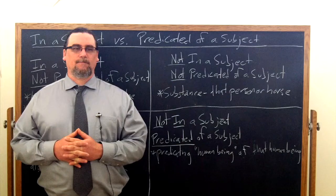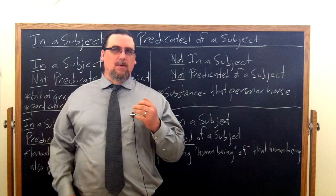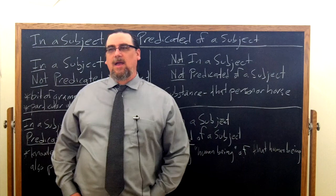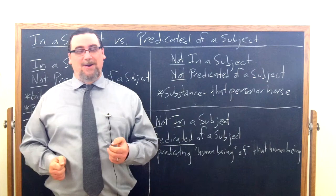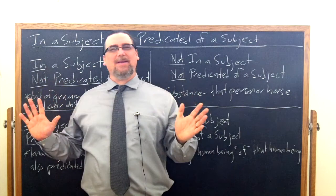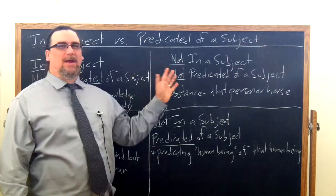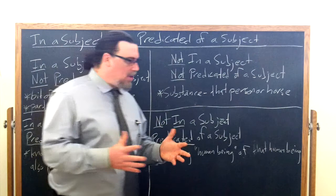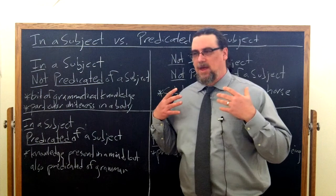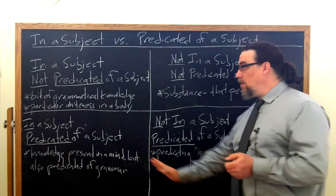In chapter two of his Categories, Aristotle makes a set of distinctions and then provides some examples that I have found myself as a student quite confusing when I first started studying Aristotle. And I have seen many students saying, what is going on here? I don't understand what he's talking about—within a subject, predicated of a subject, all these different sorts of possibilities. So it's actually not that complicated, and I think that it just requires us to follow out what Aristotle is actually saying.